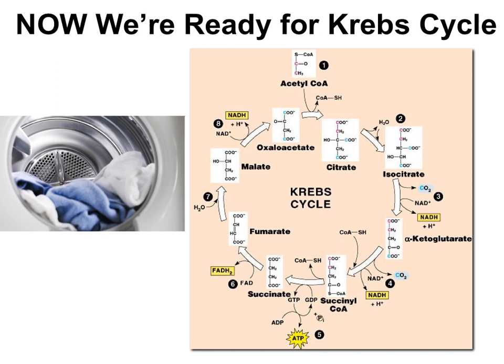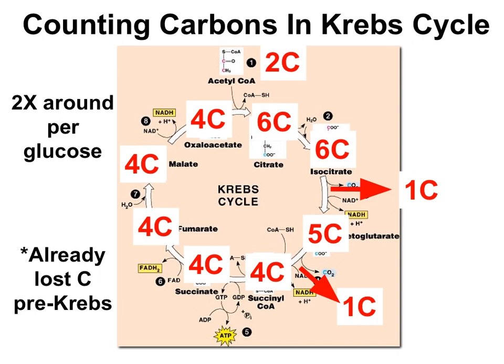Once the cell has acetyl-CoA, it's ready to start the Krebs cycle — a cycle with carbon pieces tumbling around and producing ATP, NADH, FADH2, and carbon dioxide. Let's take a closer look at the process.